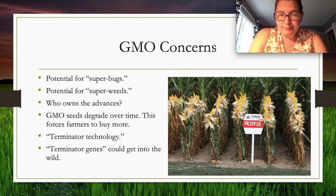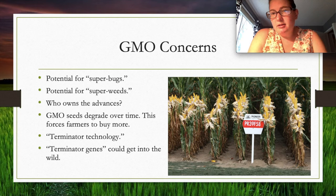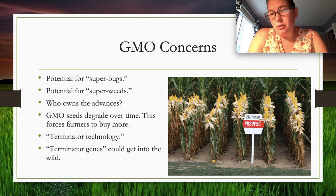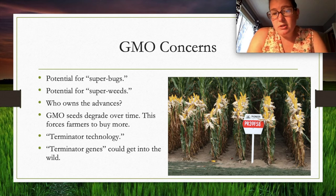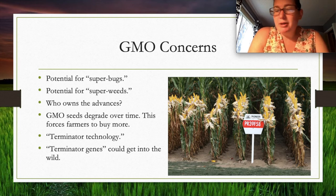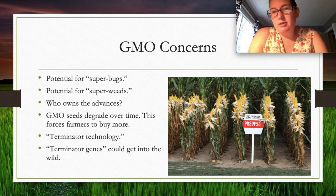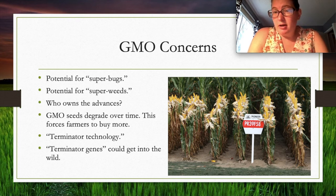Some concerns about GMOs include the potential for superbugs and super weeds, as nature can rebound against modified crops. There are also questions about who owns the rights to genetically modified seeds. GMO seeds degrade over time and don't last, forcing farmers to keep buying more — which some see as a money grab. Terminator technology refers to designing plants to self-destruct if they escape into the wild, so they don't overtake natural wildlife.